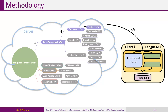The server performs another aggregation, updating the language tree nodes and their parent nodes. This parameter-efficient fine-tuning design in FEDHLT resolves the parameter inference issue and reduces the communication costs in federated learning.